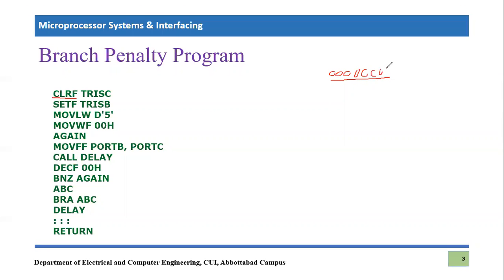The next instruction is SETF — set the file — which sets TRISB. All bits of TRISB become equal to one. So TRISB gets one and TRISC gets zero. Sending zero to TRISC means port C will be treated as an output port, and sending one to TRISB means port B will be treated as an input port.